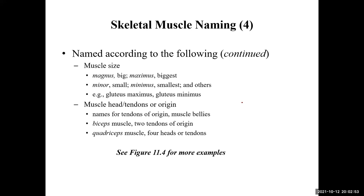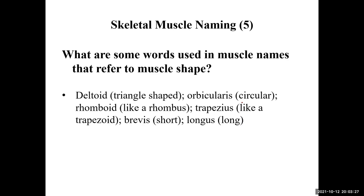Where the muscles attach is another naming convention. The biceps brachii — biceps meaning two heads — so you'll have a tendon for each head, a long head and a short head. Down in the thigh, the quadriceps muscle group — quad tells you there are four heads. Hopefully understanding the naming conventions will make learning these muscles a little bit easier.